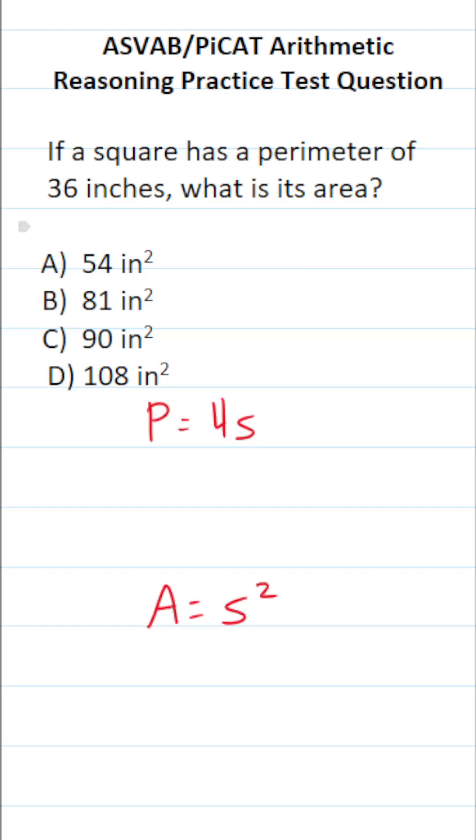In this case, we're told this square has a perimeter of 36 inches, so we know P is 36 equals 4S. In order to find its area, we need to know what S is so we can plug it into the area formula accordingly.